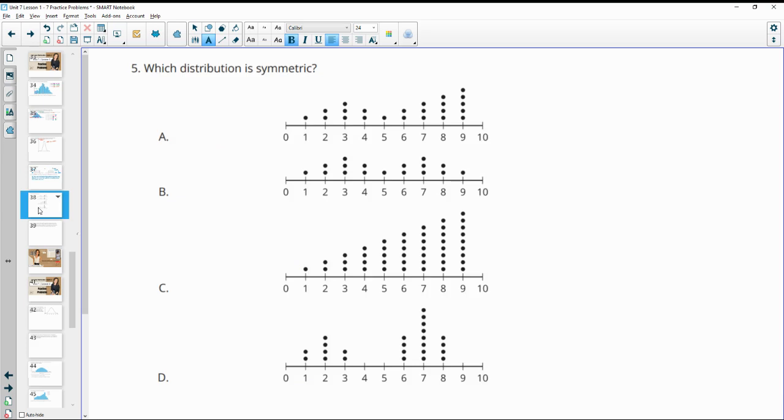Number five. Which distribution is symmetric? Remember, symmetric is equal from side to side. You're looking at like a line of symmetry for the data. If we look kind of in the middle here, this side is higher than that side, so that's not symmetric.